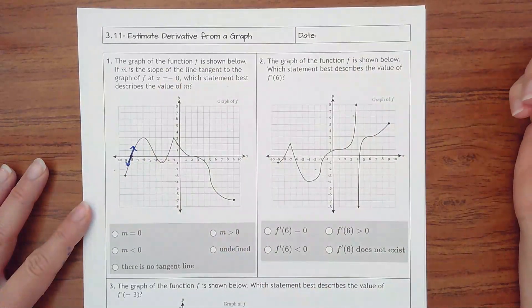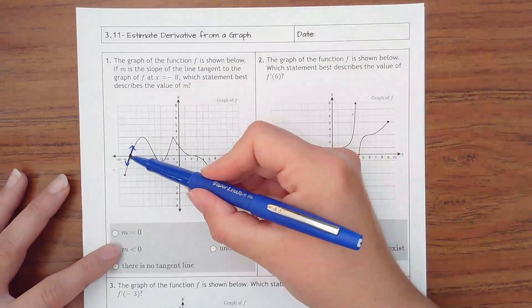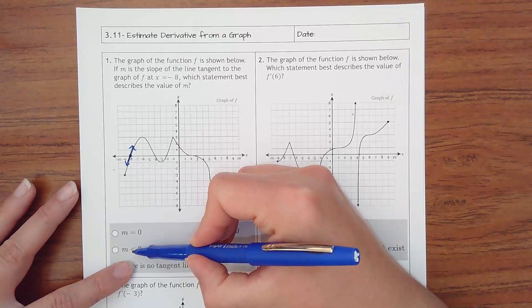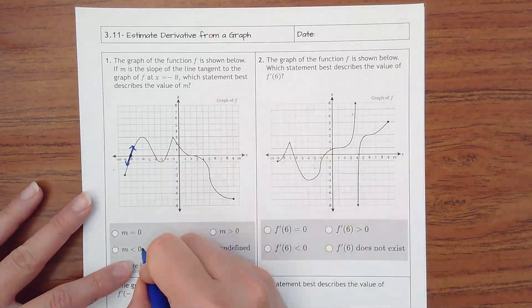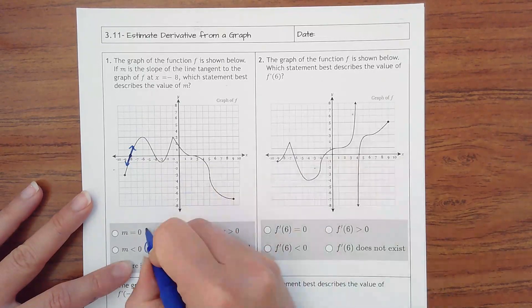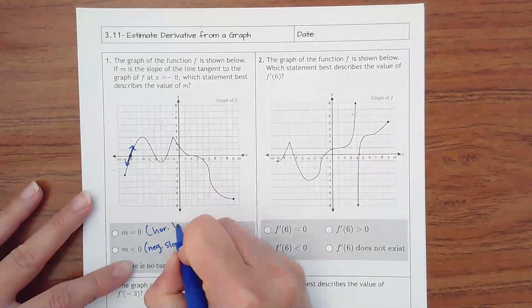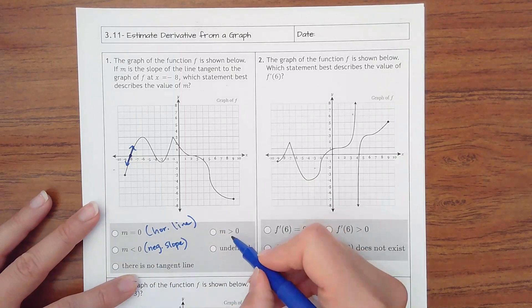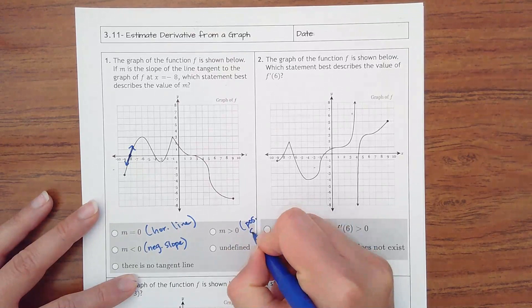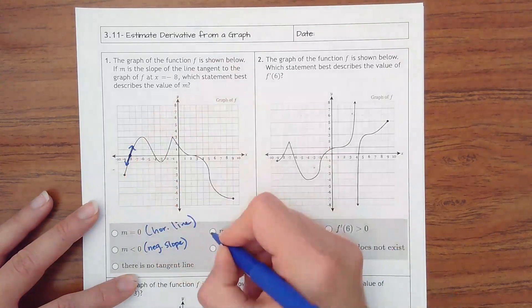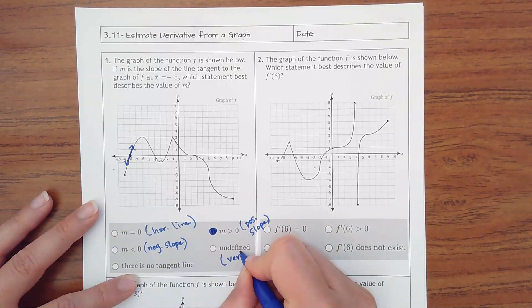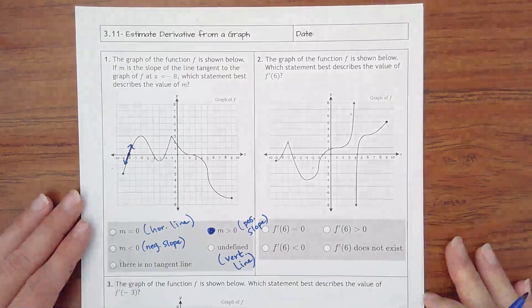So there's our tangent line. What I know about this line is it's definitely not a slope of 0 because that would be horizontal. It's not less than 0 because that would mean negative slope. There definitely is a tangent line, and the slope is positive because I can see the line is increasing. Undefined would be a vertical line.